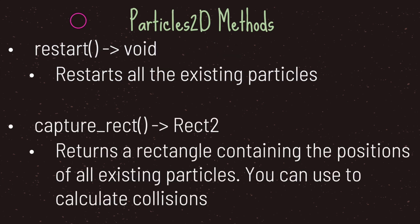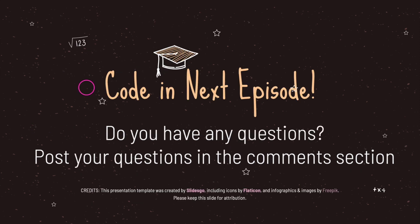The Particles2D class comes with two methods. The first is the restart method — when you call it, it restarts all existing particles. The second method is capture_rectangle, which returns a Rectangle2 data type. It returns a rectangle containing the positions of all existing particles, which is useful if you'd like to use your particles with some sort of collision calculation. Hopefully you took notes, because in the next episode we will be looking at examples of creating particle systems through the editor and through code.